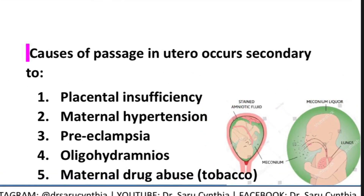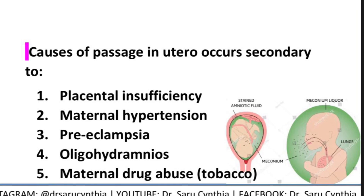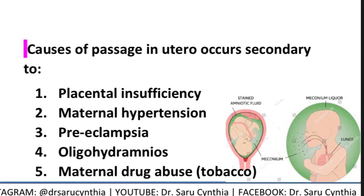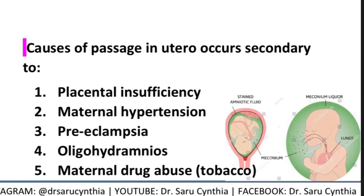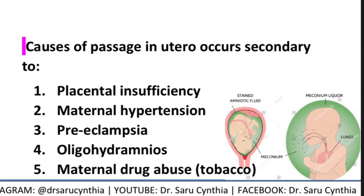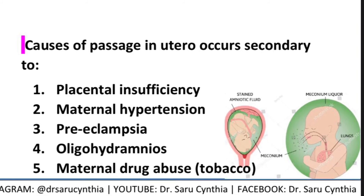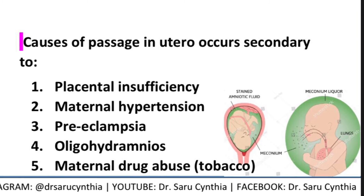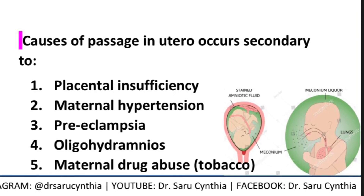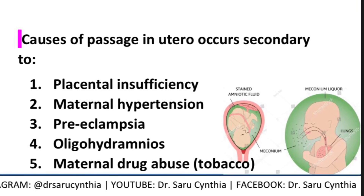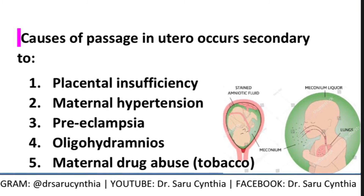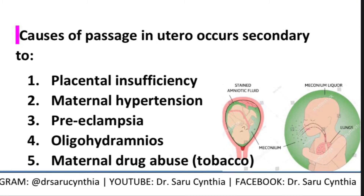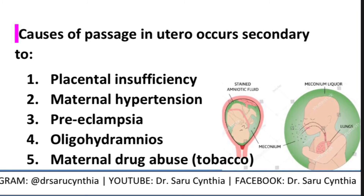Before I go to the pathophysiology of meconium aspiration syndrome, I'd like to mention a few of the causes that may lead to passage of meconium in utero. Number one, placental insufficiency of any cause or reason. Maternal hypertension, which also contributes to placental insufficiency, can be a cause. Other causes include preeclampsia, oligohydramnios, and maternal drug abuse, especially tobacco.